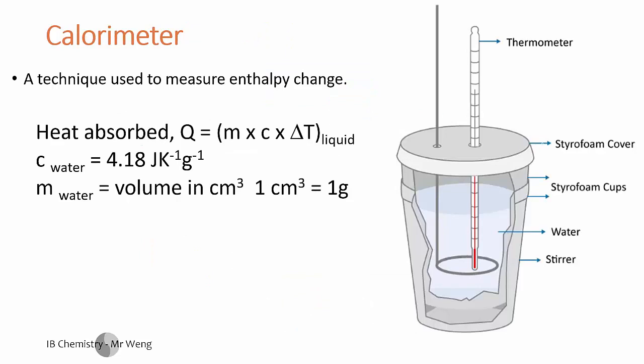How do we do these experiments? We try and prevent heat from going in or out of the system by using insulating materials. The mixer here is to make sure it's even within the reaction, and this is the temperature readings that we take here. We normally use water because it's a chemical reaction, and we make the volume of the water equal to 1 gram. That's our basic assumption.